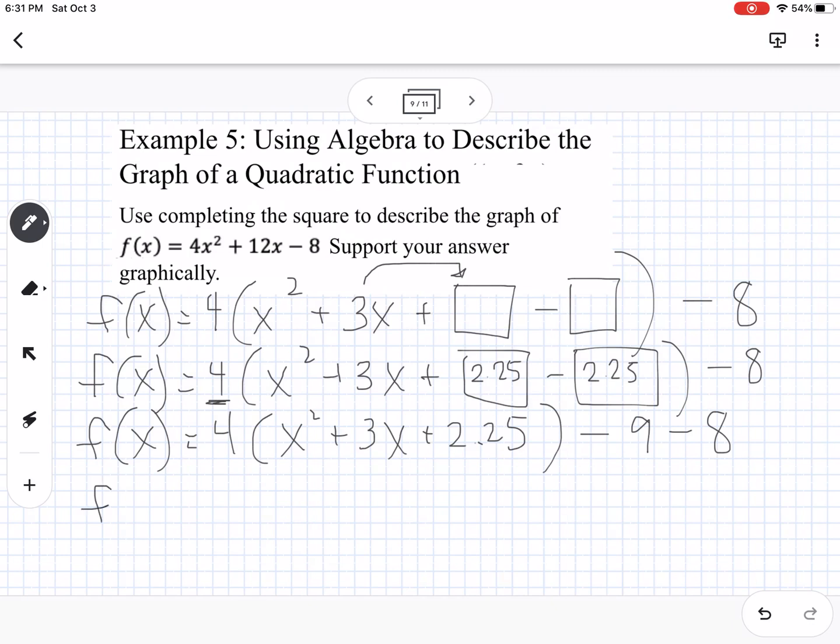So then we simplify, so we get 4. So then when we factor this x² + 3x + 2.25, we can say what multiplies to 2.25 and adds to 3, or we can just say what's half of 3, and that is 1.5 squared minus 17. So what that means is that our vertex is located at (-1.5, -17). So that's where the vertex is located. This graph opens up because the a value here is positive, positive 4. So it opens up, vertex at (-1.5, -17). And we can tell it's going to be narrower by the fact that our a value is 4.